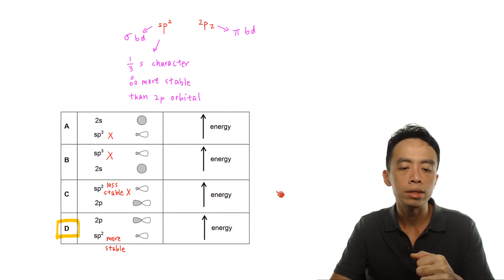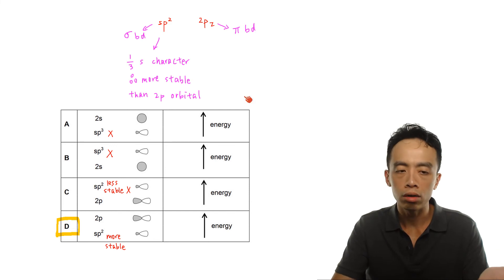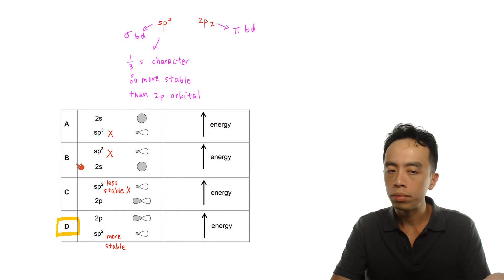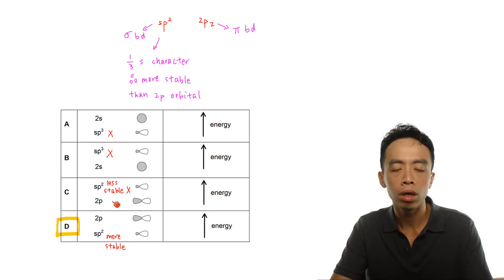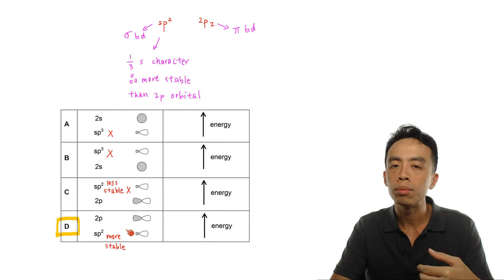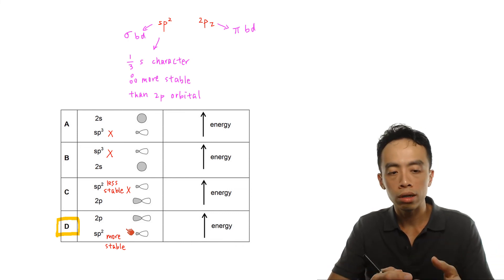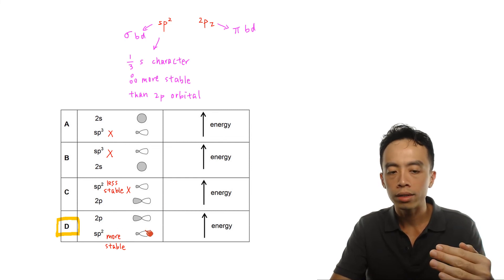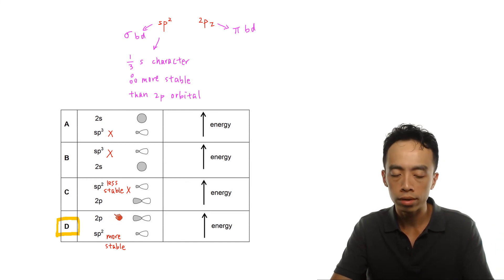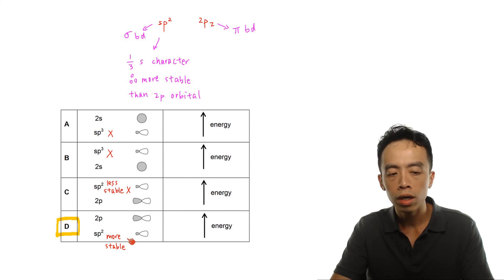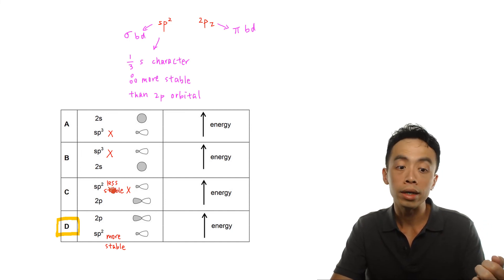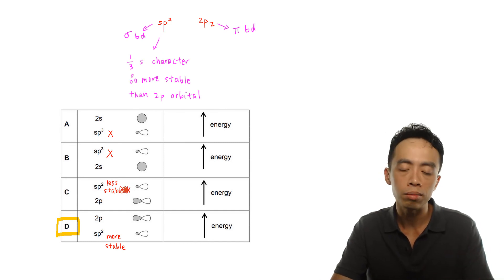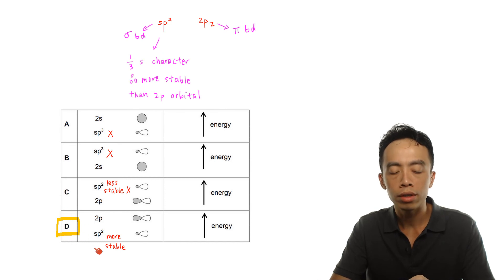Now we can run through the answer options. Option A is definitely out because the orbitals shown are 2s and sp3, which is wrong. Option B is also wrong for the same reason — 2s and sp3. The comparison should be between option C and D, both of which show sp2 hybridized orbitals and 2p orbitals. The difference is the relative energy level. D is the correct answer because sp2 is at a lower energy level and 2p is at a higher energy level, consistent with sp2 being more stable. In option C the energy levels are reversed, incorrectly suggesting sp2 is less stable. So the answer is option D.